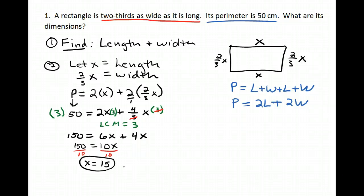I got x equals 15, but I also need to know what the width is. So I need two-thirds x. So in our case, that's two-thirds times 15, which is 30-thirds or 10.